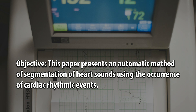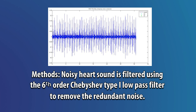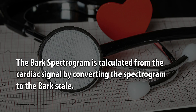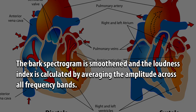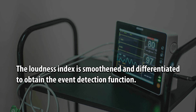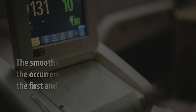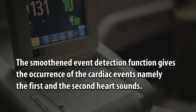Objective: This paper presents an automatic method of segmentation of heart sounds using the occurrence of cardiac rhythmic events. Methods: Noisy heart sound is filtered using the 6th order Chebyshev type I low-pass filter to remove redundant noise. The Bark spectrogram is calculated from the cardiac signal by converting the spectrogram to the Bark scale, then smoothened, and the loudness index is calculated by averaging the amplitude across all frequency bands. The loudness index is smoothened and differentiated to obtain the event detection function, which gives the occurrence of cardiac events — namely the first and second heart sounds.